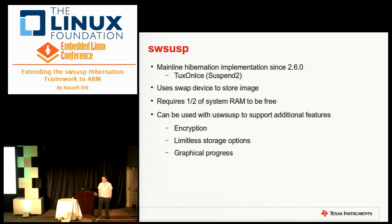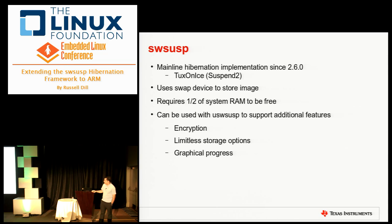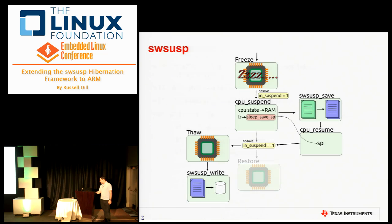SWS USP has been the mainline hibernation implementation since 2.6.0. Eventually it seems like it'll be superseded by Tux on Ice, though that hasn't happened yet. It uses the swap device to store your hibernation image, and has a requirement where half your system RAM has to be free for it to snapshot your system. It can be used with the user space SWS USP component to support additional features — you can encrypt your image, store it anywhere on the network, and get graphical progress on the snapshotting.